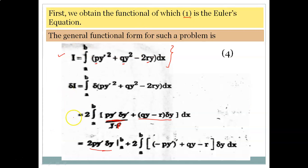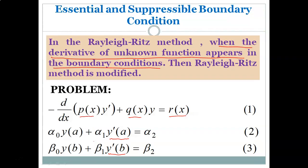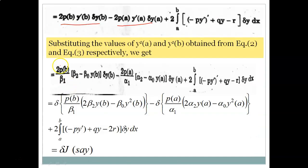Substituting the limits, since p is a function of x (not a constant), we substitute the upper and lower limits. We get 2p(b)·y'(b)·δy(b) minus 2p(a)·y'(a)·δy(a) plus remaining integral terms. The values of y'(a) and y'(b) can be obtained from boundary equations 2 and 3 respectively.